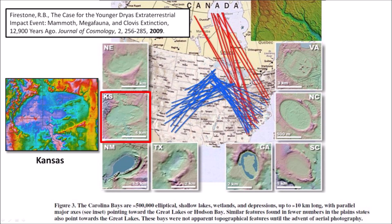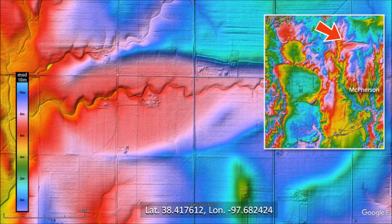The Glacier Ice Impact Hypothesis, published in 2017, proposes that the basins originated from secondary impacts of glacier ice ejected by an extraterrestrial impact on the Laurentide ice sheet. I will examine several basins in Kansas that have not been too badly eroded so that they can be fitted with ellipses by the least squares method.